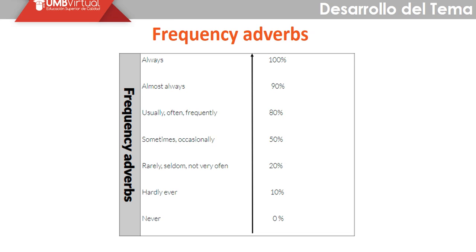The frequency adverb is generally placed after the subject. The order is: subject, frequency adverb, verb, and the rest. However, with the verb 'to be,' we place the adverb after it — for example, 'I am always happy,' 'I am hardly ever sad.' So you can see the use.